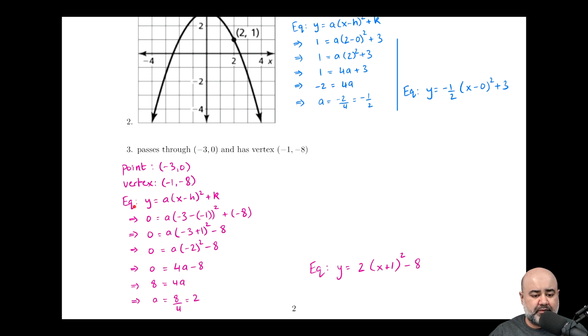Now, because we wanted it in vertex form, I'm going to start with that equation. And then just like in the past two examples, I would just plug the numbers in. So y we know is zero, a is unknown, x is negative three. So instead of this x, we write a negative three here. h is negative one.